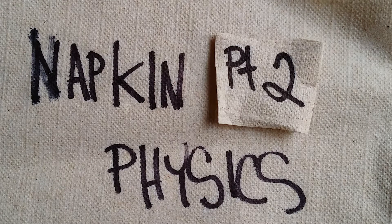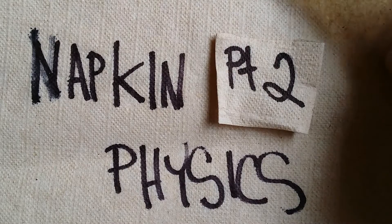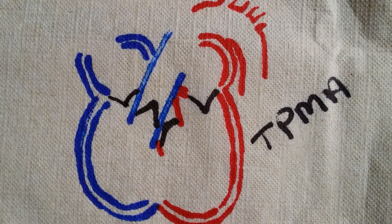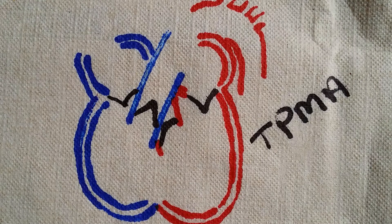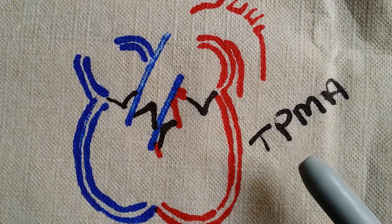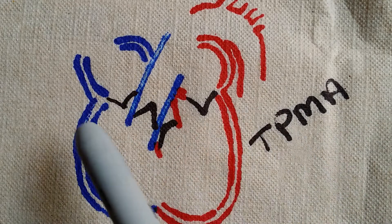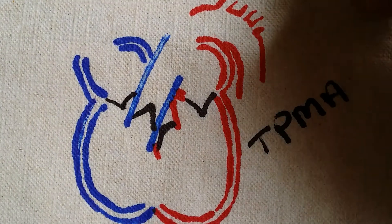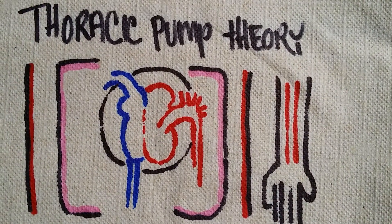Hey everybody, welcome back to Napkin Physics. This is going to be part two of our CPR physics and the two theories on CPR. We just went over the cardiac pump theory and now we're going to go over the thoracic pump theory. Remember that we have to remember 'toilet paper my ass' for all the valves, and they had to be operational in the cardiac pump theory. So let's jump into the thoracic pump theory.